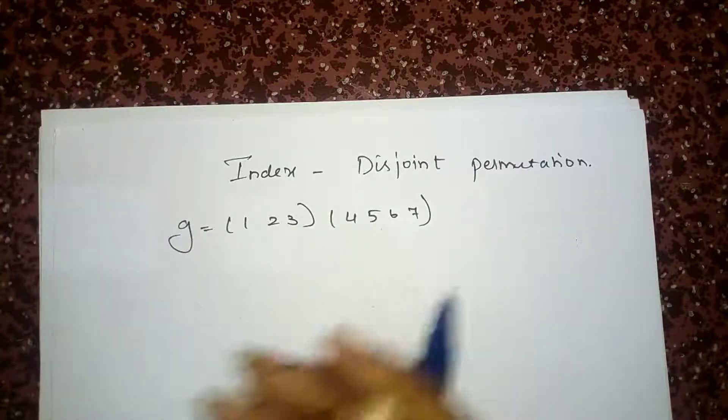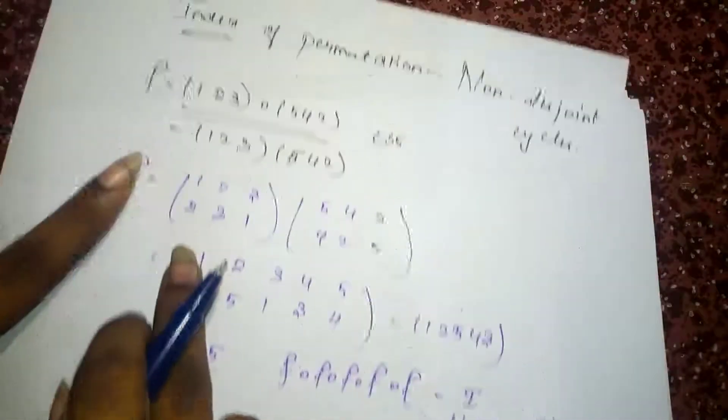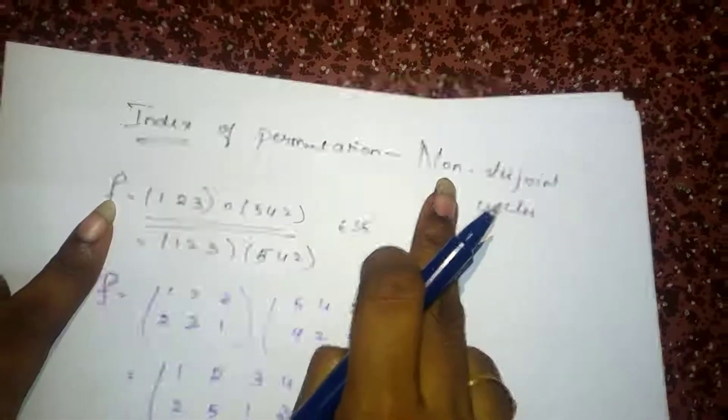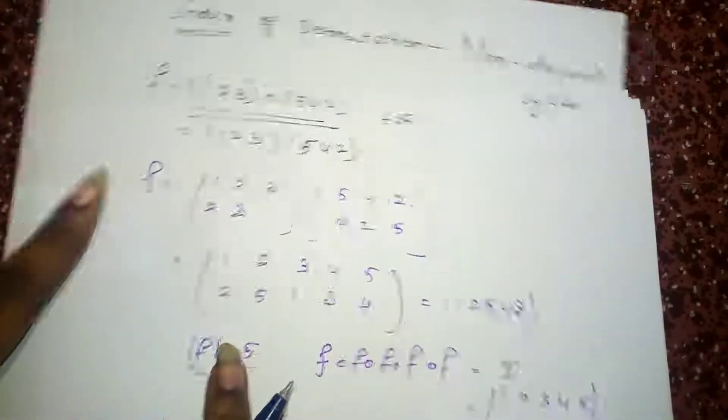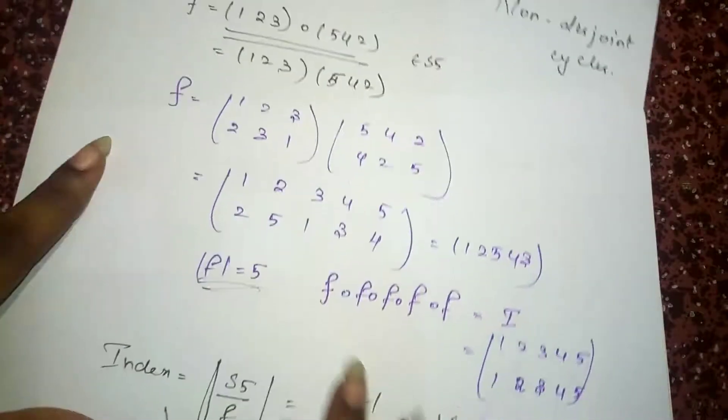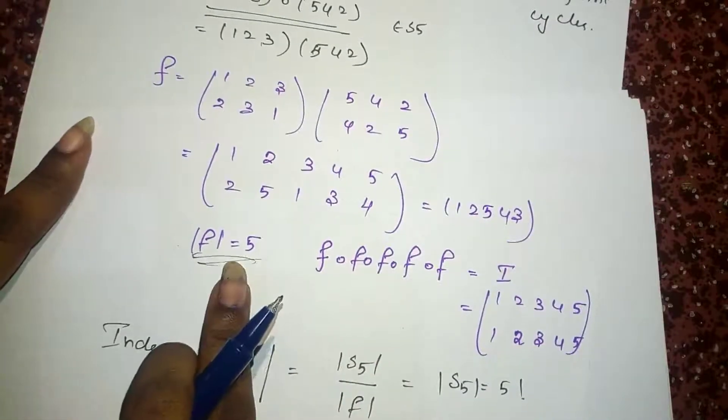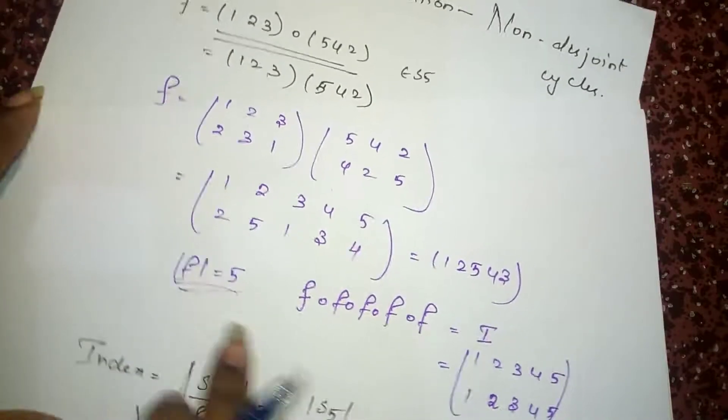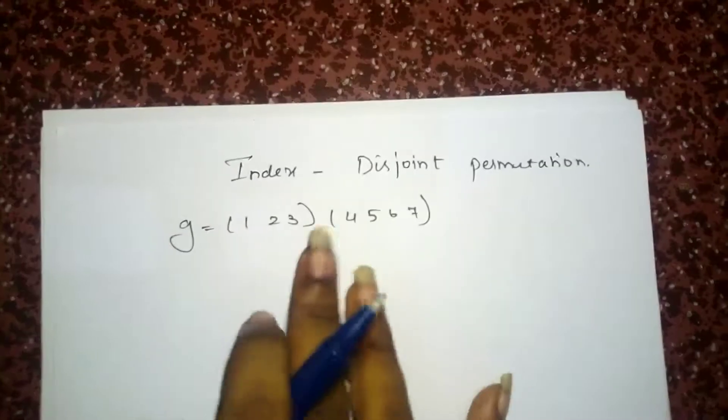In our previous lecture, we have found the index using non-disjoint cycles. For this f, I have found the composition mapping and then I found the order of f. In the same way, I am going to do this also.